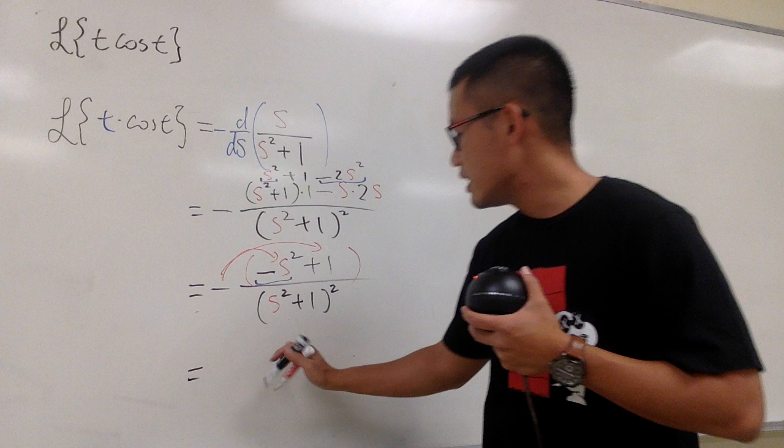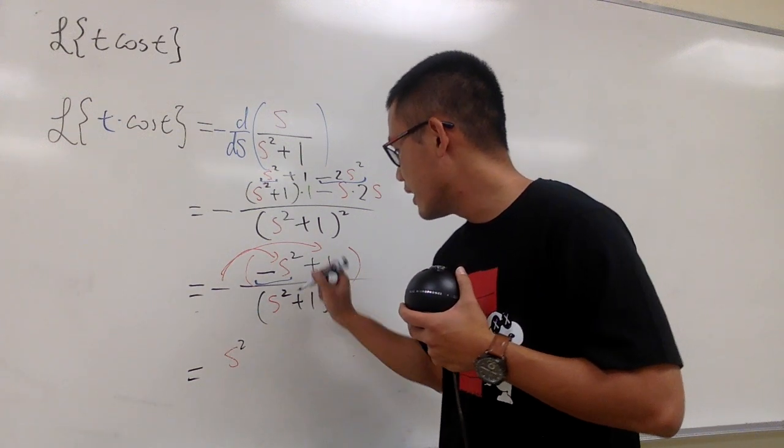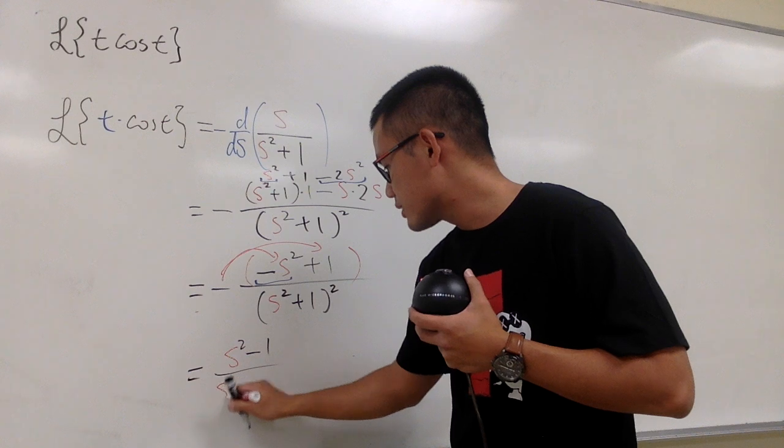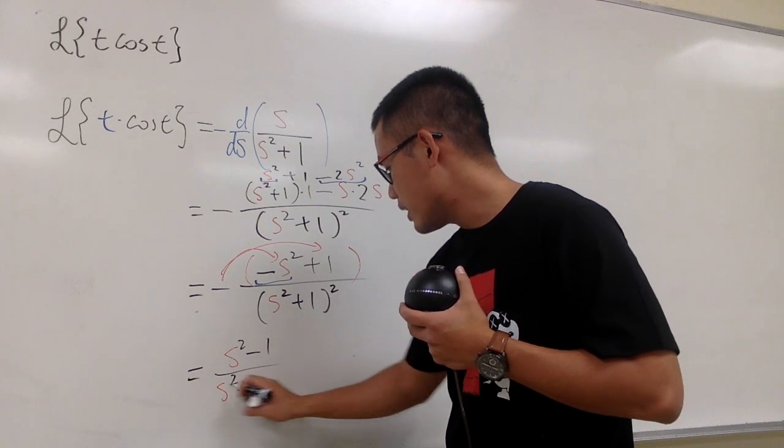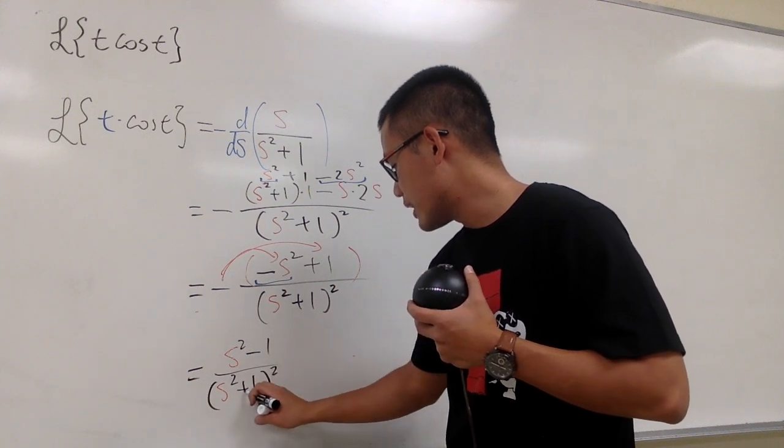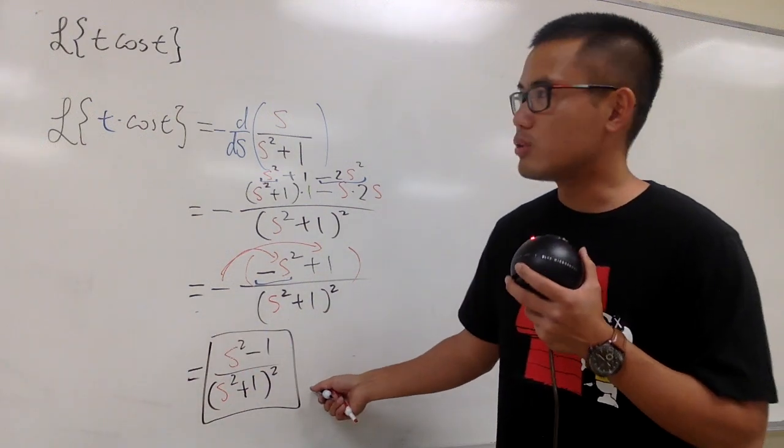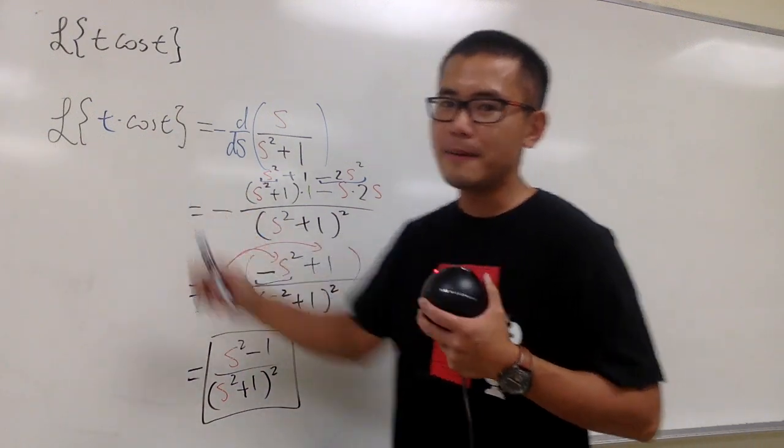So negative negative becomes positive s squared. And then negative times the 1, so it becomes minus 1, over s squared plus 1 in parenthesis squared. So this right here is it, the Laplace transform of t times cosine t. That's it.